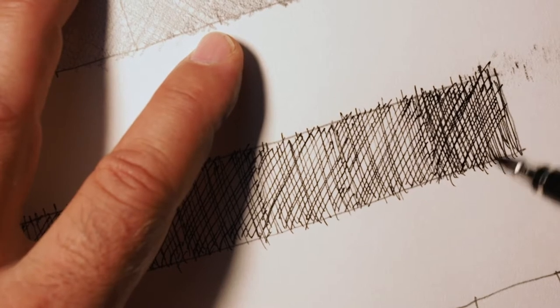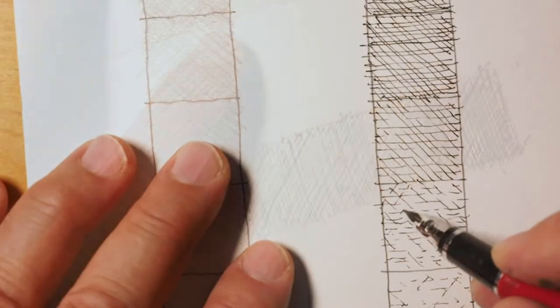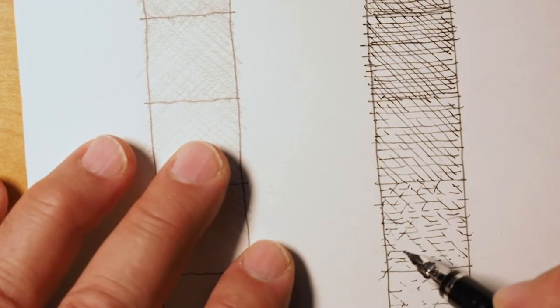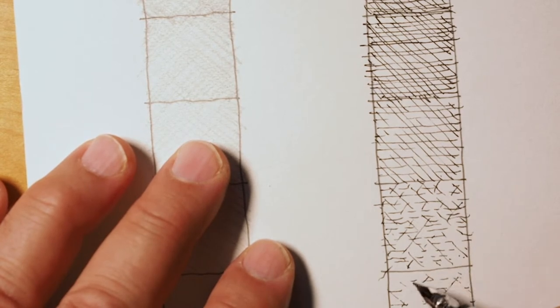I'm going to just criss-cross lines and draw the lines closer together in order to make each square a little bit darker.